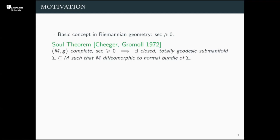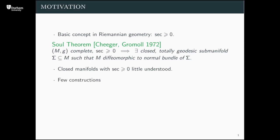One of the few is the famous Soul theorem of Cheeger and Gromoll, which says that if you have a non-compact non-negatively curved manifold then it is diffeomorphic to the normal bundle of a closed totally geodesic submanifold called the Soul. This Soul inherits the curvature properties of the ambient space, so in some sense it says that the only interesting spaces to look at in non-negative curvature are the closed ones. Yet these aren't very well understood in terms of topological properties or even examples, and one of the problems is that there are very few constructions of these objects.